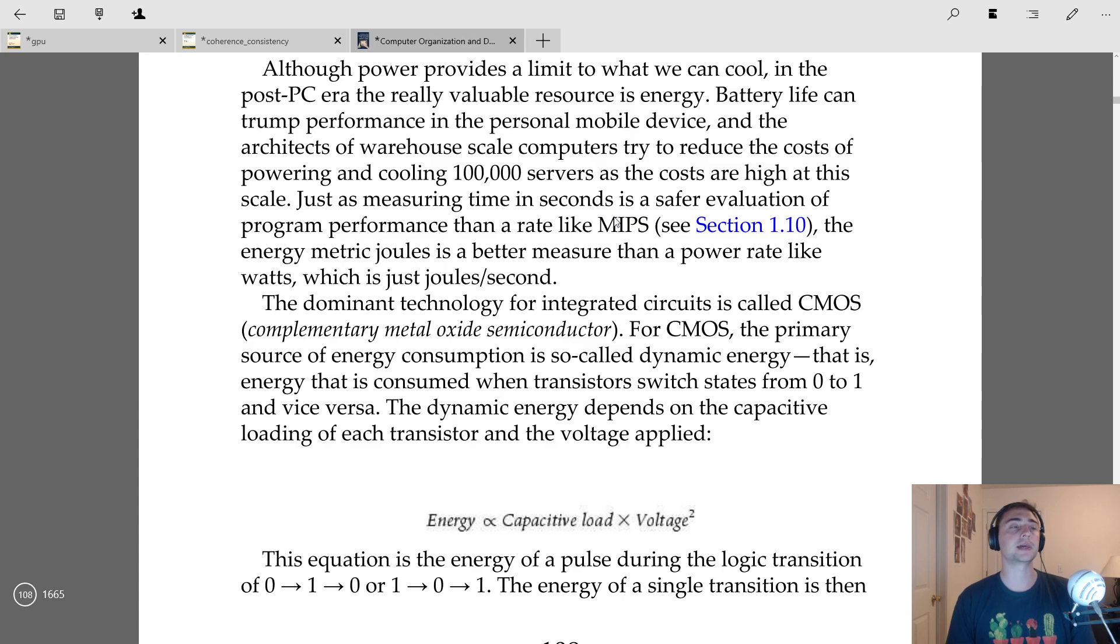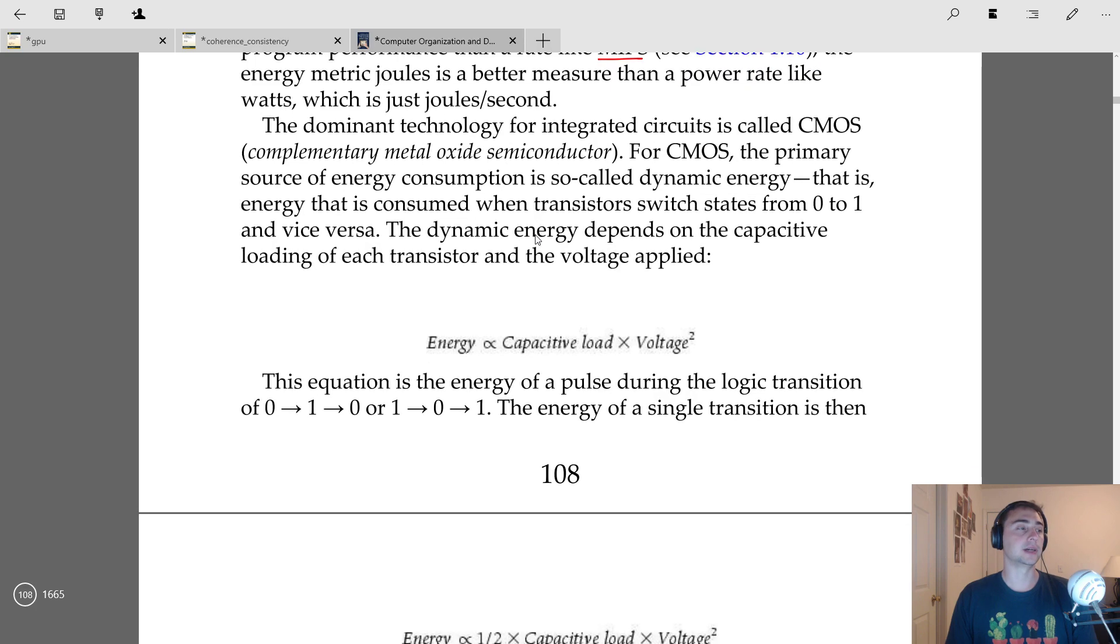One thing that we'll find out here is that just measuring things in terms of performance, like MIPS or millions of instructions per second, is not quite a safe evaluation. The metric joules is a better measure than a power rate like watts, which is just joules per second. When we're talking about energy, we need to talk about why this power wall came about, and it all comes back to the technology that we use for integrated circuits.